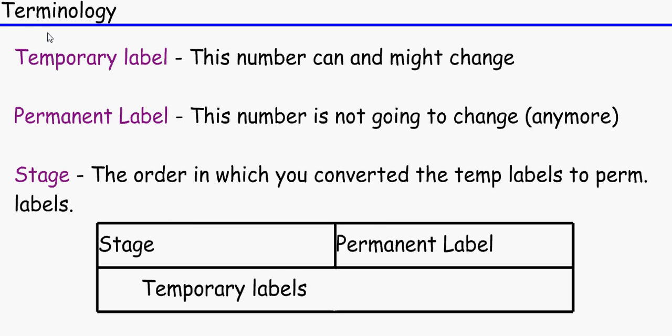There's a bit of terminology for you. The first one is a temporary label. You'll see what temporary labels are when we actually do the example. But this number that is temporary can and might change.